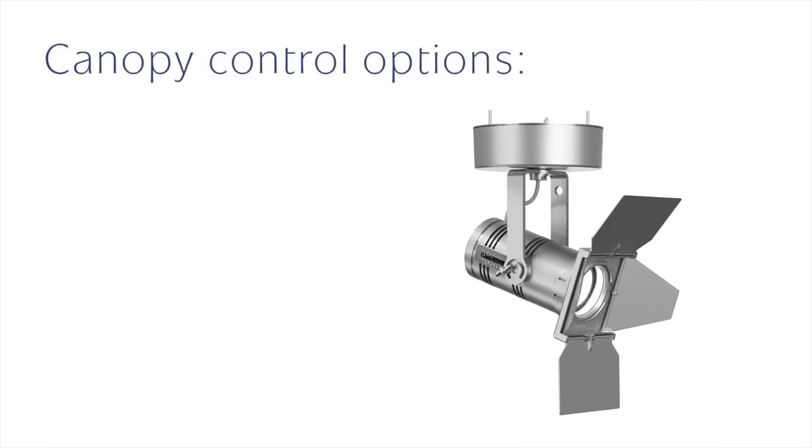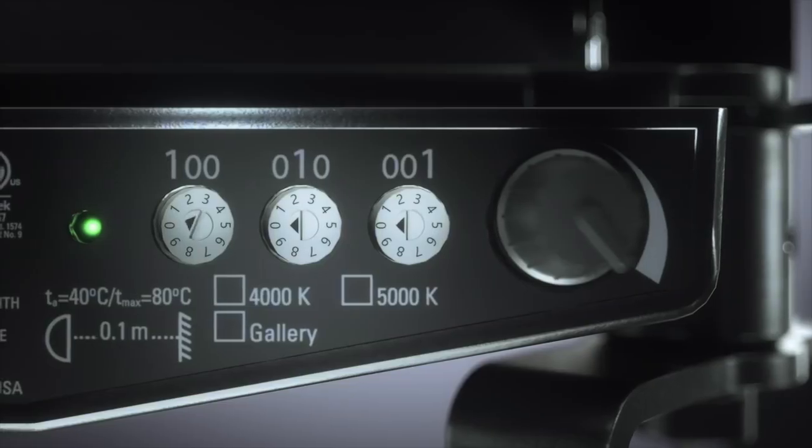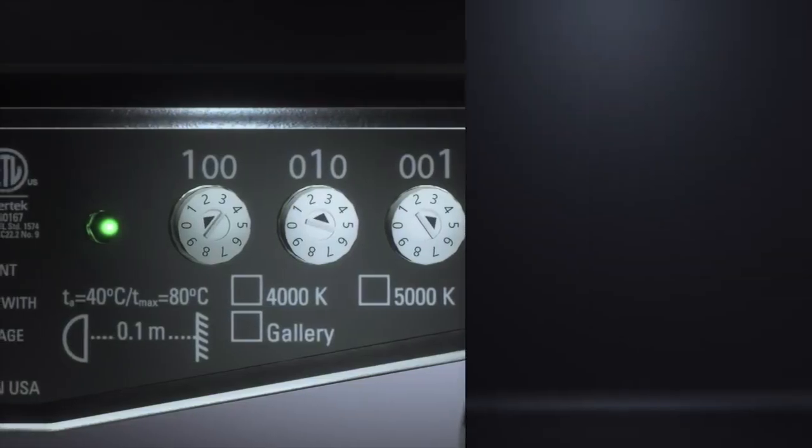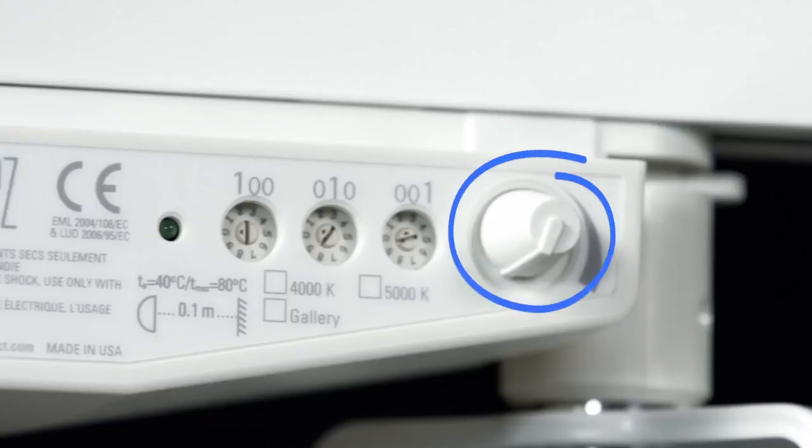The canopy version is available with DMX, 0-10V, or DALI control options. If you'd like to use the Datatrack distribution system, there are options for both 2-circuit Datatrack fitting for 120V markets or 3-circuit U-Track fitting for 230V markets. When using Datatrack in any market, the WLZ can be individually addressed for DMX controlled dimming or by using the trim pot located on the track adapter.